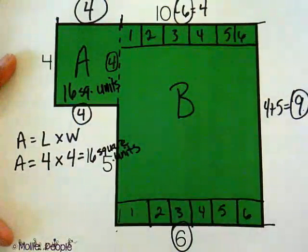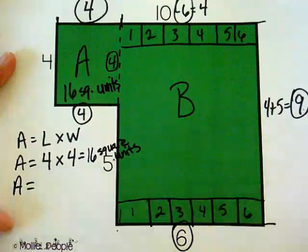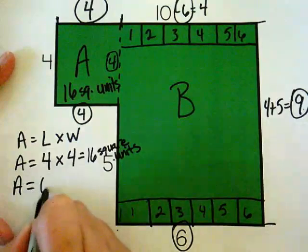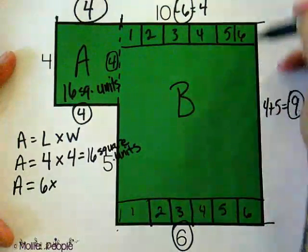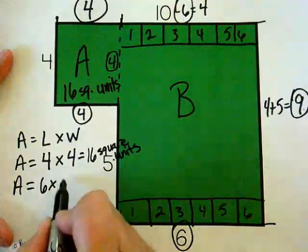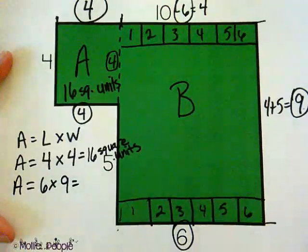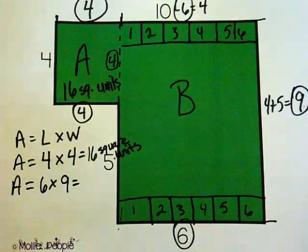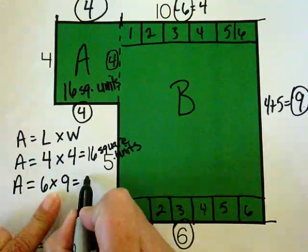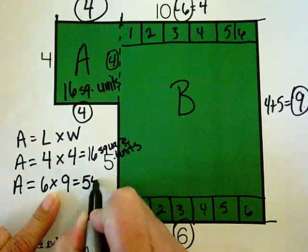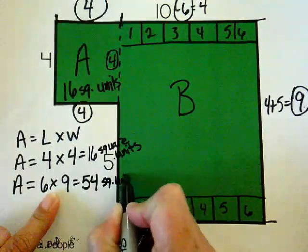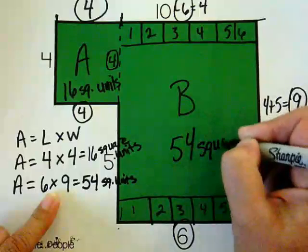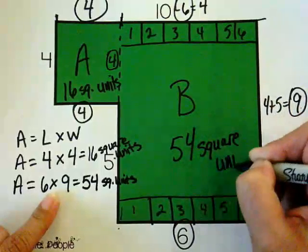How about rectangle B? What do I know? Well I know area equals length times width. So my length is six units. My width here is nine units. What's six times nine? Oh, six times ten is sixty, minus six would be six times nine. So that is sixty minus six is fifty-four. So this one is fifty-four square units.